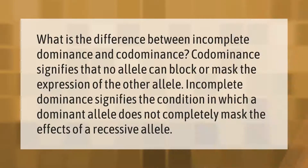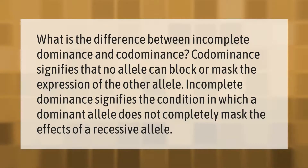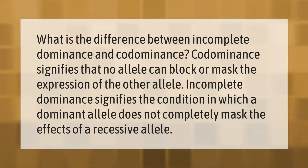What is the difference between incomplete dominance and codominance? Codominance signifies that no allele can block or mask the expression of the other allele. Incomplete dominance signifies the condition in which a dominant allele does not completely mask the effects of a recessive allele.